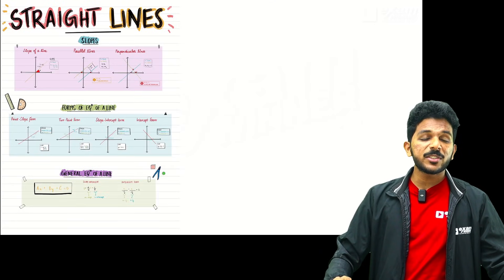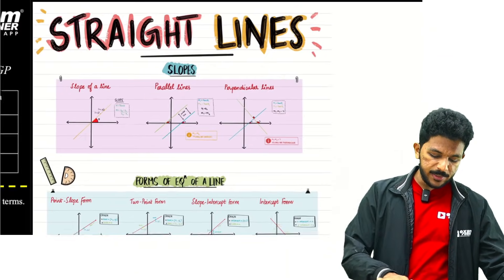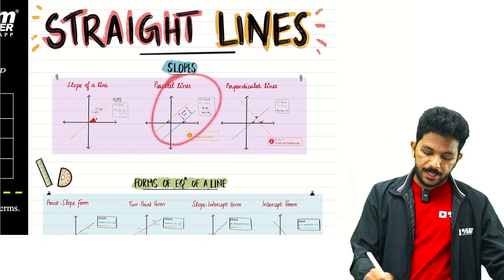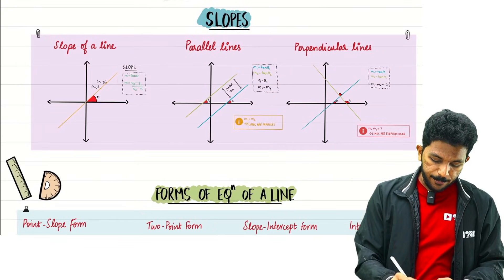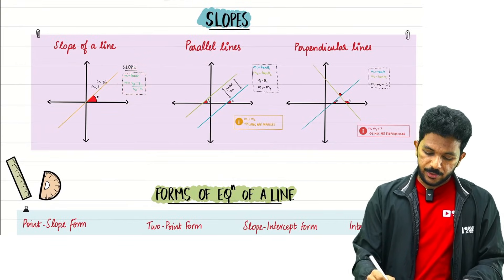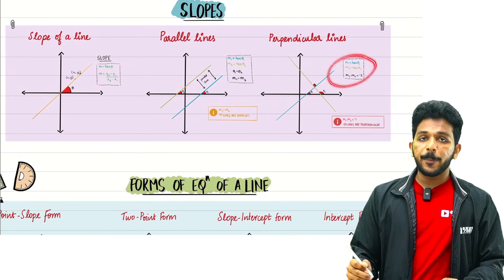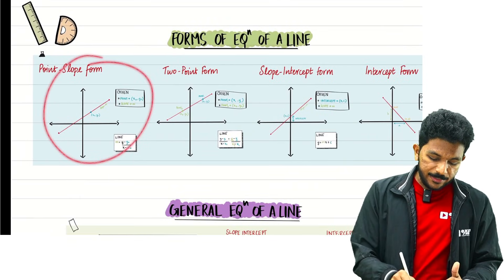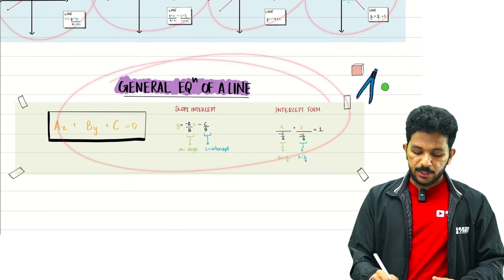The next chapter is straight lines — very simple. I have a formula sheet with slope of line, parallel lines, and perpendicular lines. The slope has two formulas: m equals tan theta and the point formula. Parallel lines have the same slope. Perpendicular lines satisfy m1 times m2 equals minus 1. Then the slope-point formula, slope-intercept form, and the general equation of a line.